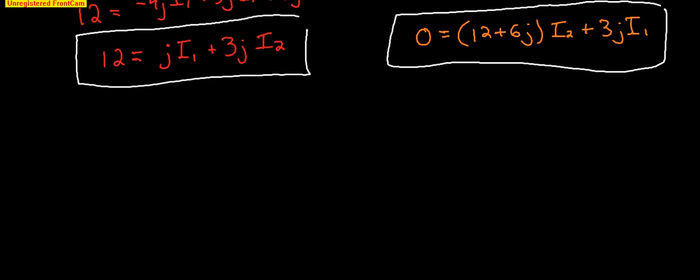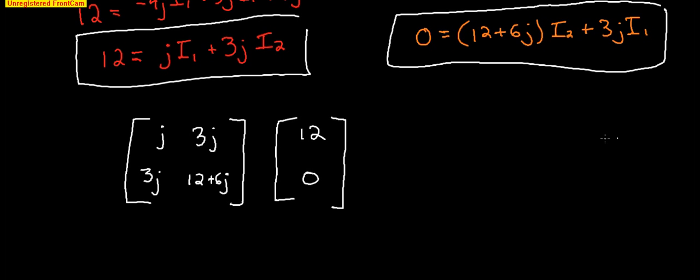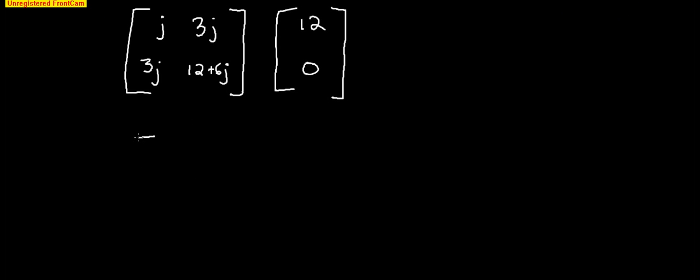So now we can solve this. I'm going to solve this using determinants. Because even if you don't have a TI-89, you can still solve these using a TI-83. If we write this in matrix form, we're going to have the first equation will be j and the second term will be 3j, and that equals 12. And in our second equation, we have 3j and then this term will be 12 plus 6j, and that equals 0. To solve this using determinants, you have to find the determinant of 3 terms.